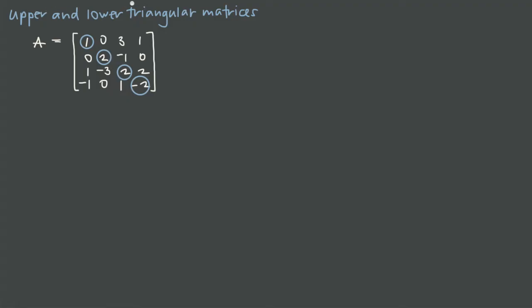When you think about an upper triangular matrix, all the non-zero values are in the upper right-hand corner of the matrix. Similarly, a lower triangular matrix is where all your non-zero entries are below the main diagonal and all your zero entries are above the main diagonal.